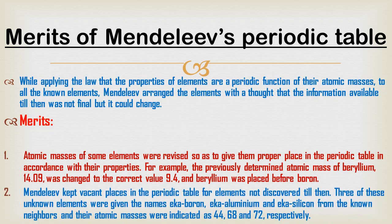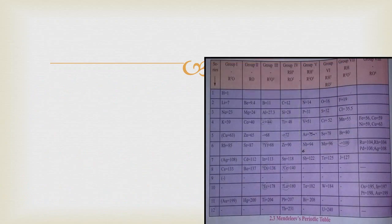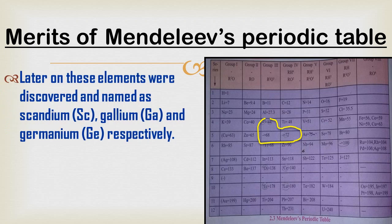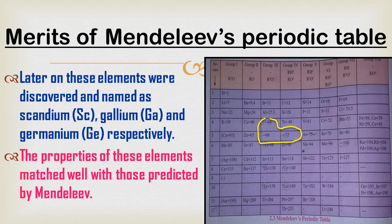The second merit is that Mandeliev kept vacant places in the periodic table for elements not yet discovered. Three of these unknown elements were given the names Eka-boron, Eka-aluminium, and Eka-silicon, based on known neighboring elements, with predicted atomic masses of 44, 68, and 72 respectively. Later, these elements were discovered and named Scandium, Gallium, and Germanium, and their properties matched well with those predicted by Mandeliev's periodic table.